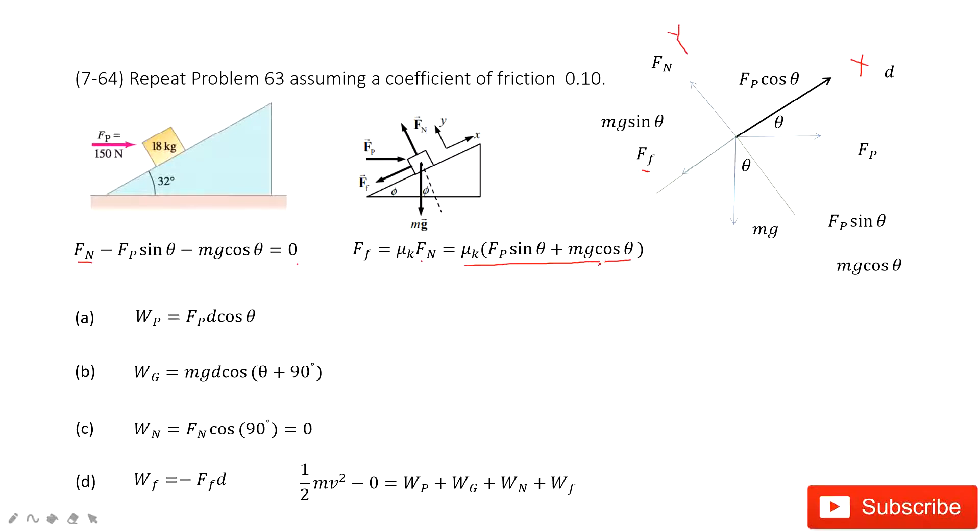Now we need to find the work done by Fp. You can see, this is Fp, this is the distance it moved, d, angle theta. So very easily, Fp times d times cosine theta. And Fp and d are given, theta is given. Easy.